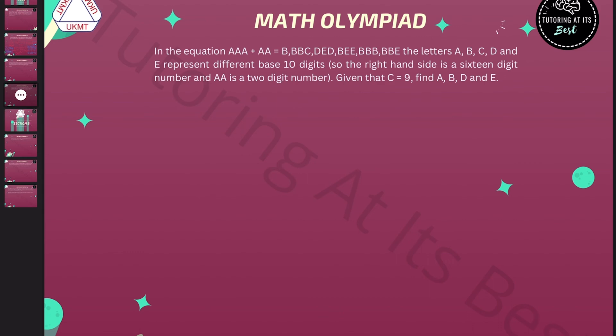In the below equation we have the letters A, B, C, D, and E, and they represent different base 10 digits. So the right hand side is a 16 digit number and AA is a two-digit number. Just to ensure, this is A to the power of AA. Given that C equals 9, find A, B, D, and E.